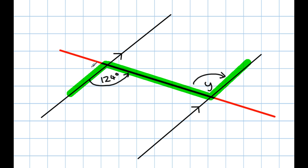Now, that means, if they form a Z, that they are alternate angles. Now, alternate angles have the same property as corresponding angles that are equal. So, Y equals 124 degrees.